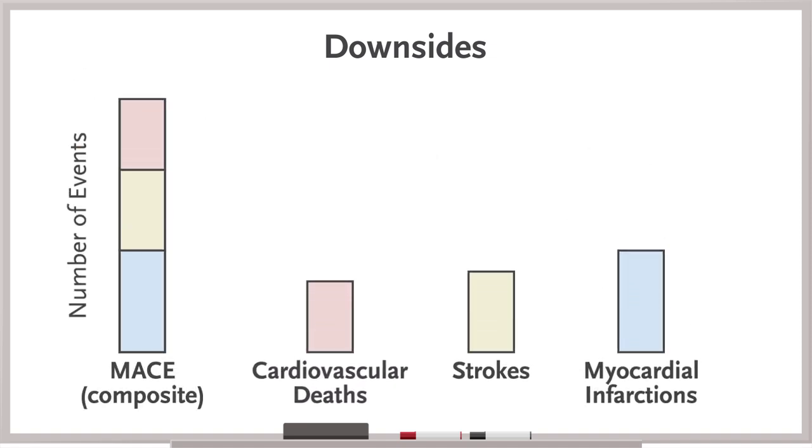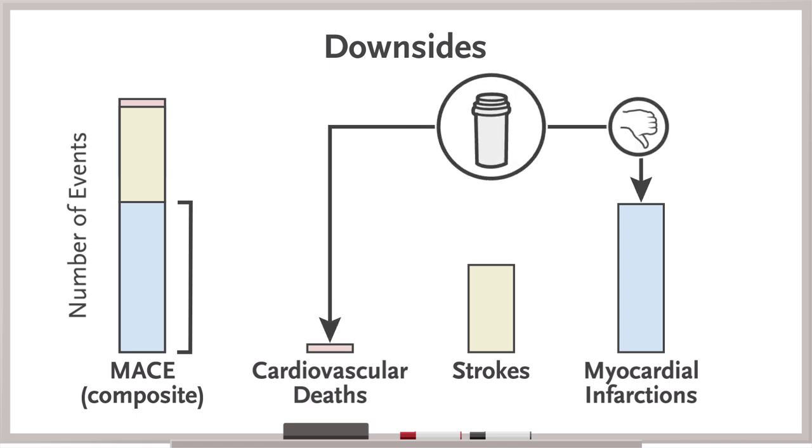Second, how frequently an event occurs influences its effect on the composite. If MIs are more common than cardiovascular death, those events will make up the greatest component of the composite. A problem could arise if the treatment does not prevent MIs, which are relatively common, but does lower rates of cardiovascular death, which is pretty rare.